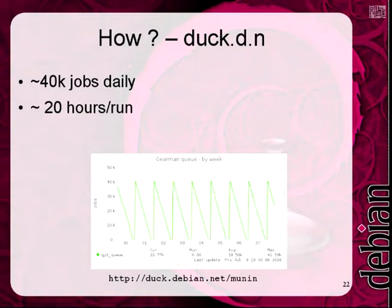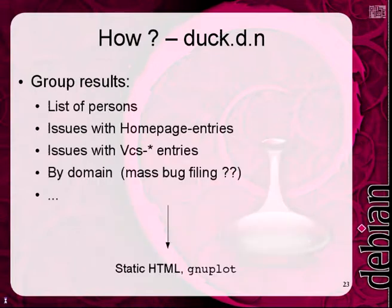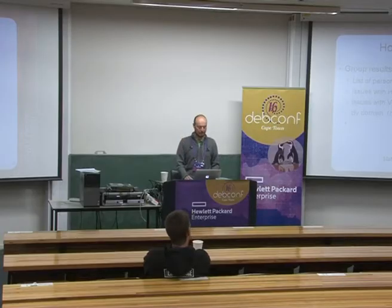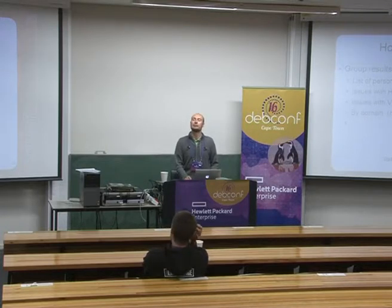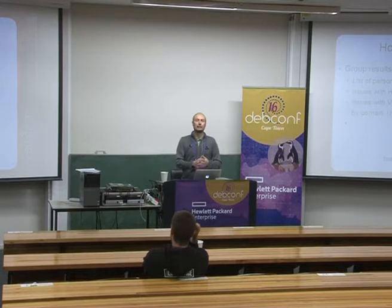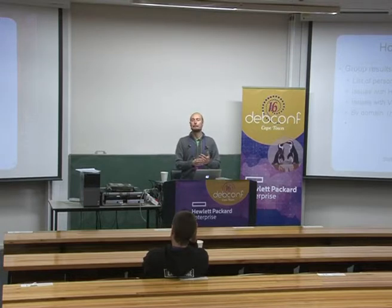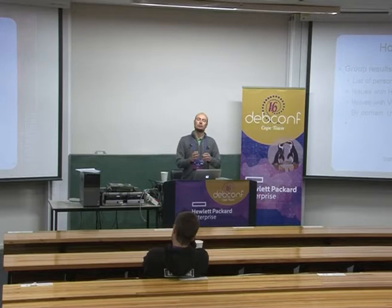It takes about 20 hours to run. At 10 minutes past midnight, I start a new run with 40,000 jobs, and on duck.debian.net you can see the progress. The data that comes out gets grouped by person — issues with homepage entries, issues with VCS entries — or by domain. The idea behind grouping by domain was: if some specific domain is not working, either it's really down and we wait, or there was a migration from one host to another, so it might be easier to notify the team handling those packages which all share the same base URL.